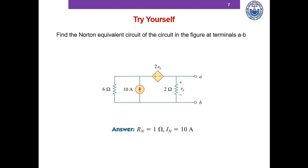Hopefully we've been able to solve this. We do a short circuit, and the current flowing through the short circuit is 10 amperes because the resistance is cancelled. The voltage across the short circuit is 0, which means Vx equals 0, which means 2Vx equals 0 as well, so that dependent source is also effectively a short circuit. The 6 ohm resistor is in parallel with the short circuit, so the entire current flows through the short circuit, making the Norton current 10 amperes.